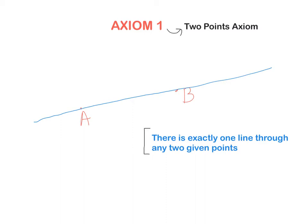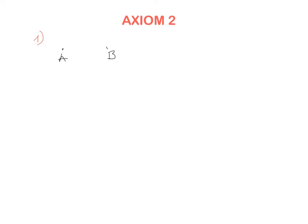Now we have the next axiom, which is about the distance between two points and its properties. Let's say we have two points A and B and we want to check the distance between them — we need a ruler and measure the distance. The distance will never ever be a negative number; it's always a positive number. So the first statement here is: the distance between two points is never negative. You would never say the distance between A and B is minus three.